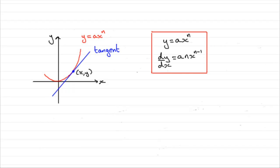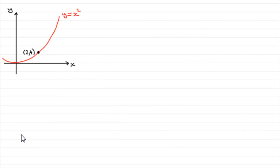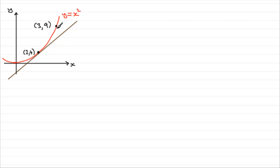We'll start by looking at a very simple curve: y equals x squared. Suppose we want to find the gradient at the point (2, 4) on the curve. That's going to be exactly the same as the gradient of the tangent at that point. Now I can look at another point on the curve — let's say it has an x coordinate of 3. The corresponding y coordinate would be 3 squared, which is 9. If I draw a line from one point to the other, it's called a chord, and I'm going to work out the gradient of this chord.